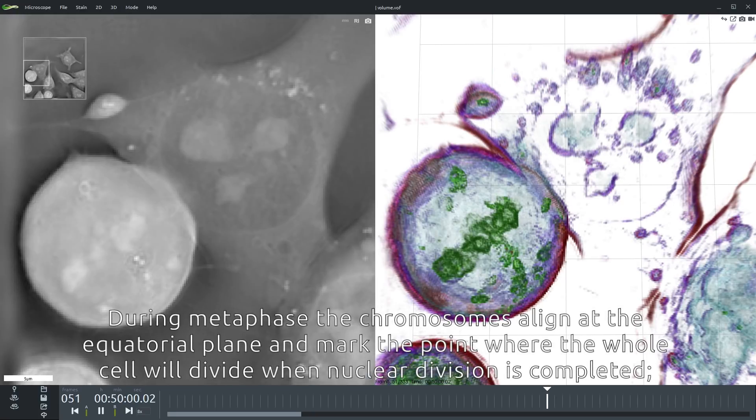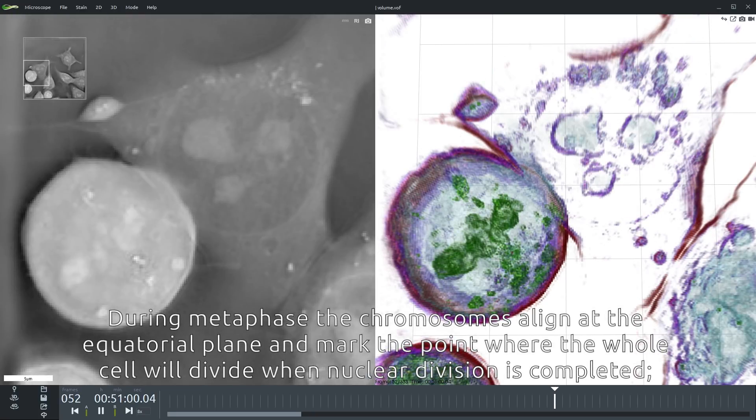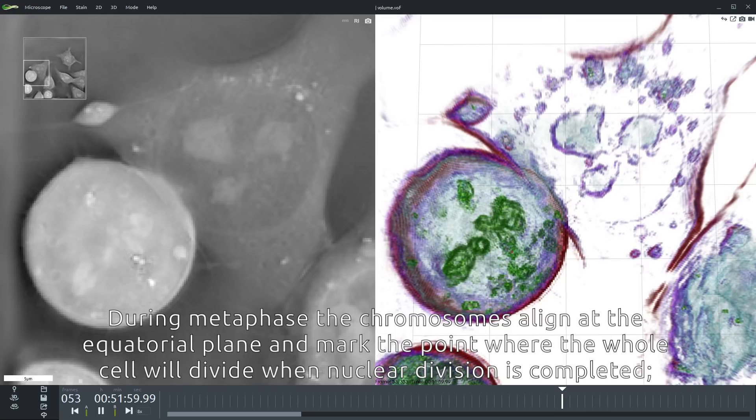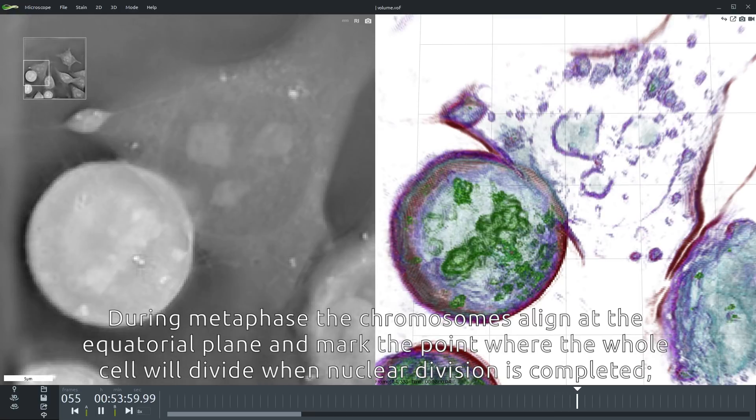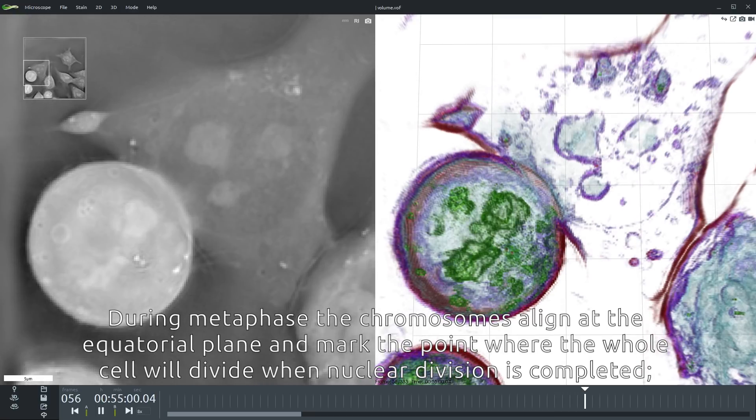During metaphase the chromosomes align at the equatorial plane and mark the point where the whole cell will divide when nuclear division is completed.